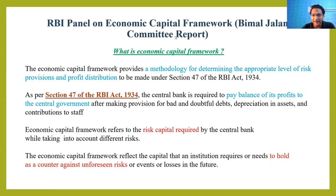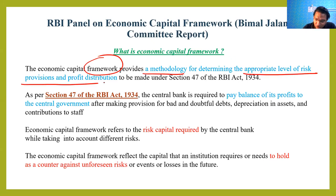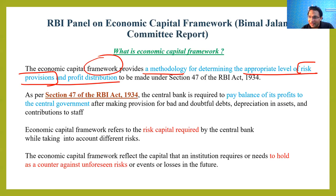The Economic Capital Framework provides the methodology for determining the appropriate level of risk provision and profit distribution. Risk provision means how much money the RBI should retain with itself — in the form of surplus — for any kind of risk that might arise, such as the contingency fund and revaluation reserve. The framework determines both how much RBI should retain and how much profit it should distribute to the central government.